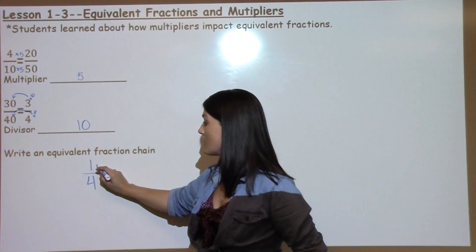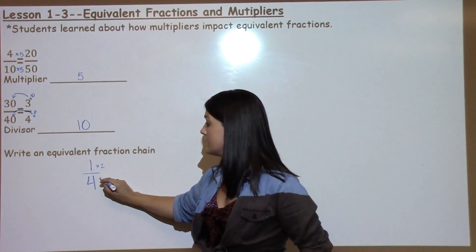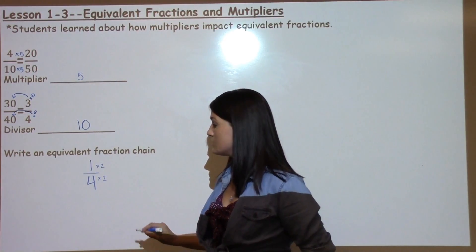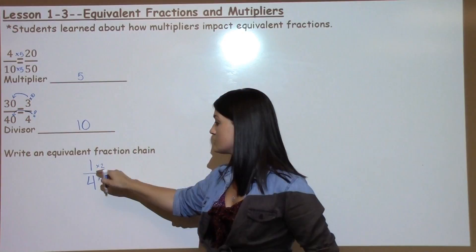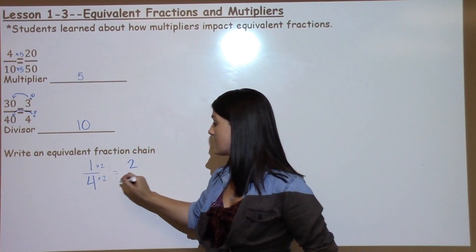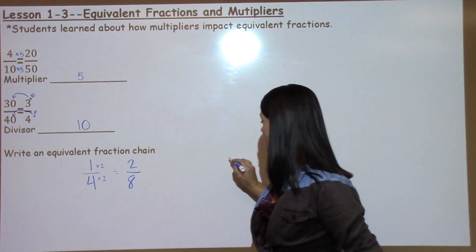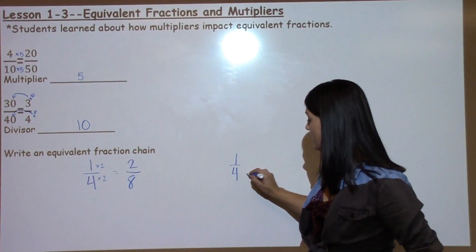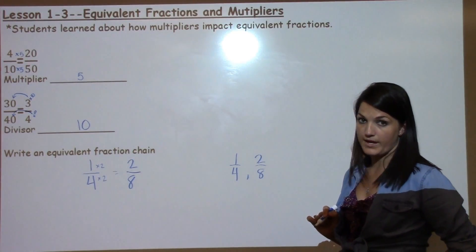For instance, if they wanted to take 1 fourth and multiply the top and the bottom by 2: 1 times 2 is 2, 4 times 2 is 8. So therefore, 1 fourth and 2 eighths are equivalent.